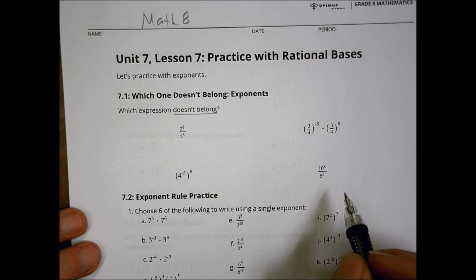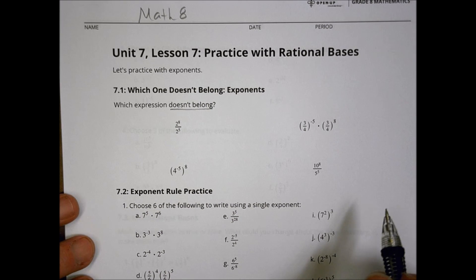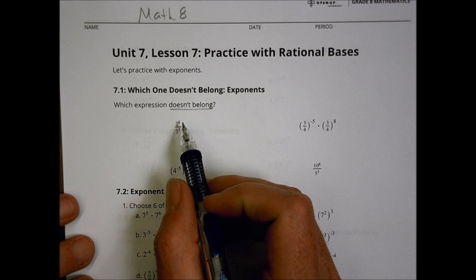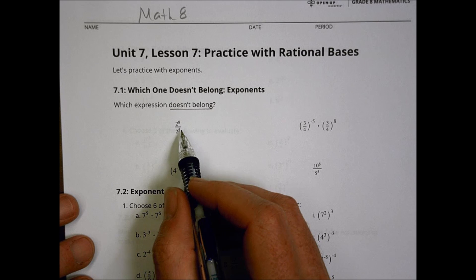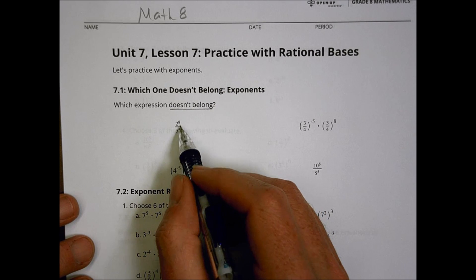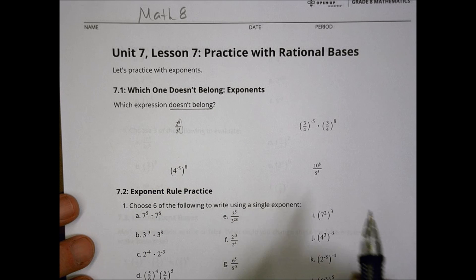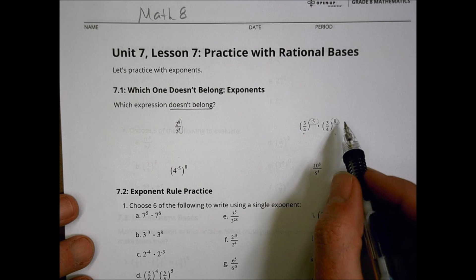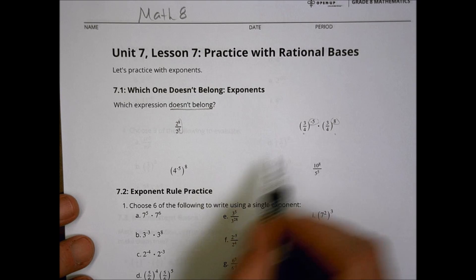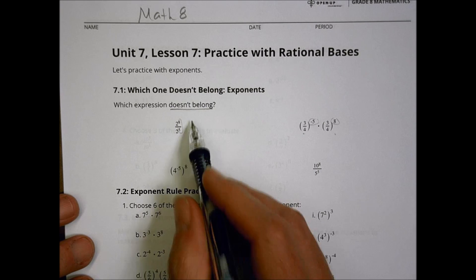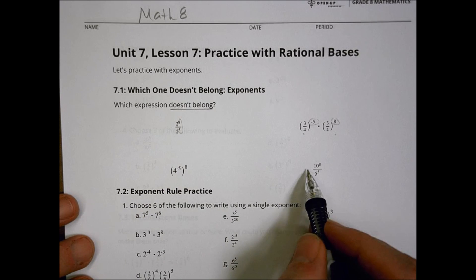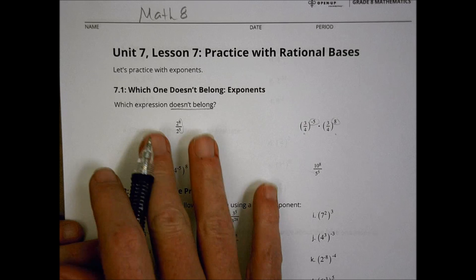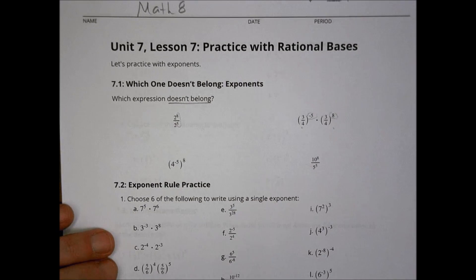As you look at these, there might be a reason why each one of them you might say doesn't belong. For example, when we look at all of these, we notice that this one seems to be the only one that has both the same base and positive exponents. Here we have the same base, but a negative and a positive, so those don't quite match. The only one that has all positive is this one, but they're on the same base — so maybe that's why it doesn't belong. There are reasons for each one; you have to talk through what you think it is. I'll let you do that with your classmates today.